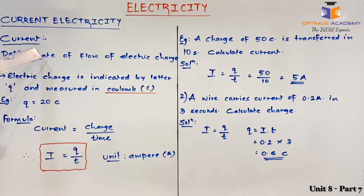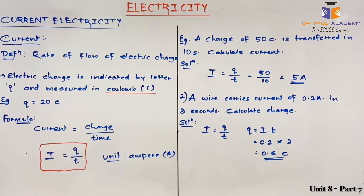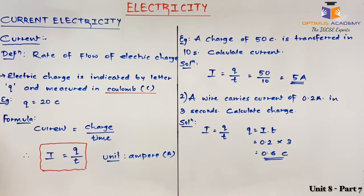Based on the definition, formula for current will be charge upon time, that is electric charge moving per unit time. In symbolic form, we can write it as I equals to Q upon T, where Q is charge and T is time. Current is measured in ampere. Also note that current is a fundamental physical quantity, that is current does not require any other physical quantity for its measurement.